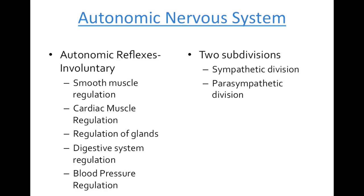Our autonomic nervous system controls our reflexes and involuntary muscles — smooth muscle, cardiac muscle. It controls our glands which release endocrine hormones as well as exocrine responses. It also regulates our digestive system, blood pressure, and urinary system — basically all of the smooth and involuntary responses that our body uses to maintain homeostasis.